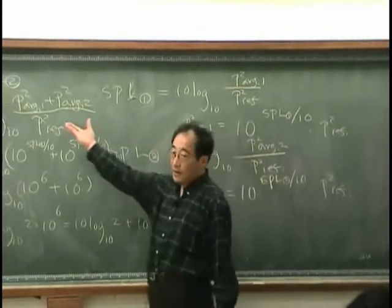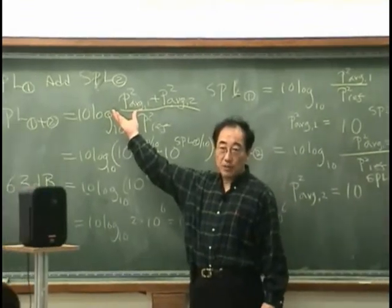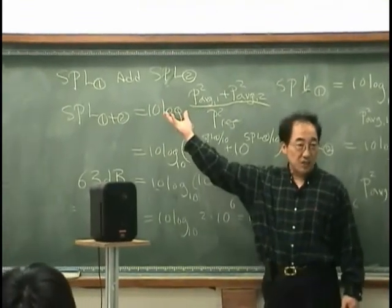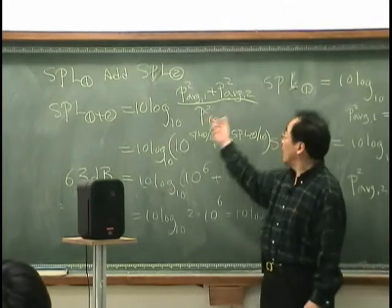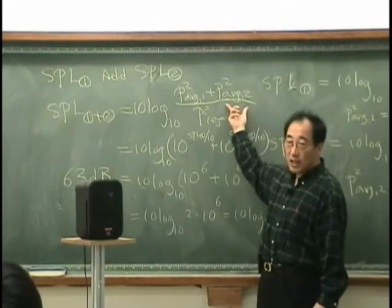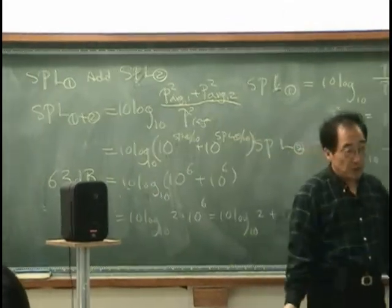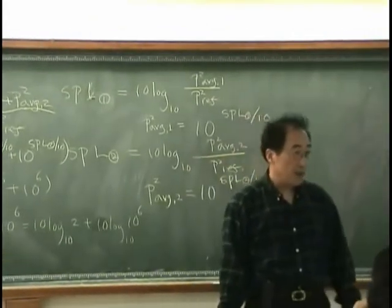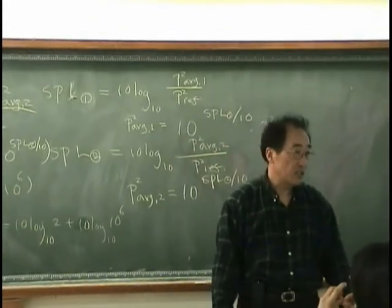If I have mean square average pressure, that is 90 dB, and the mean square pressure of a second tone is only 50 dB, then what dB we will have? That is very close to 90 dB.